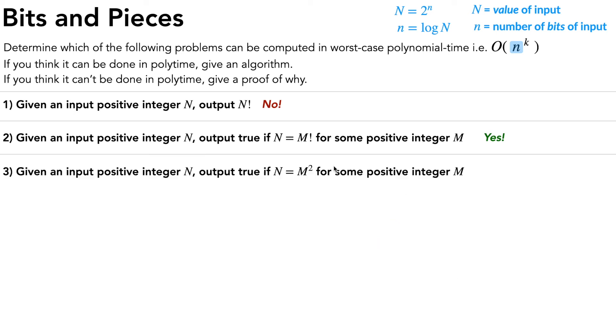Awesome, let's move on to problem 3. Given an input positive integer N, output true if N is equal to M squared for some positive integer M. So all we changed for part 3 from part 2 is we went from M factorial to M squared.